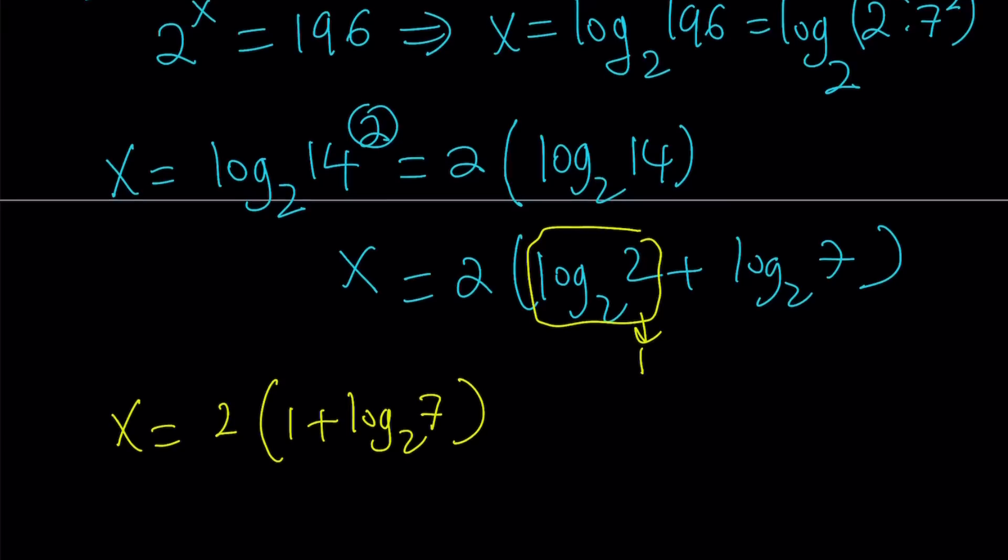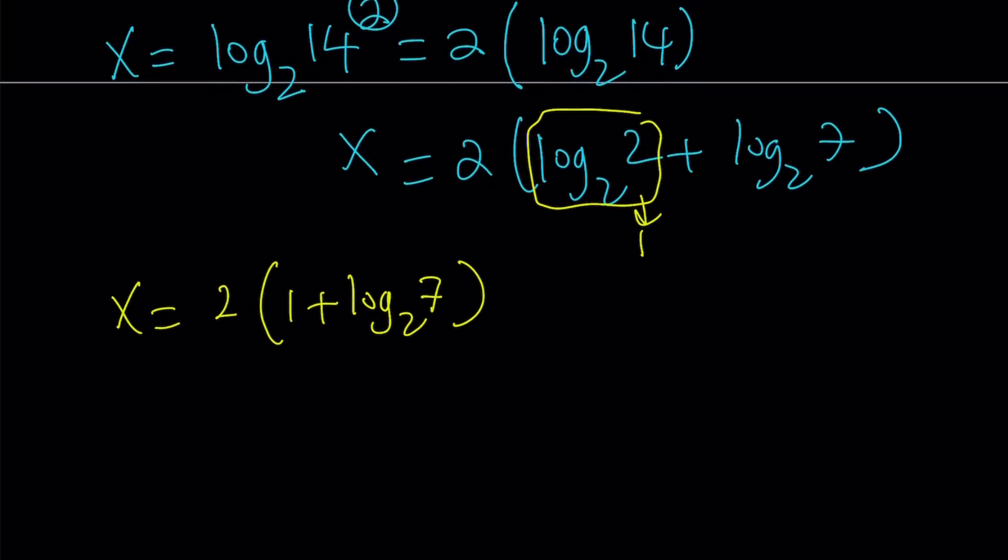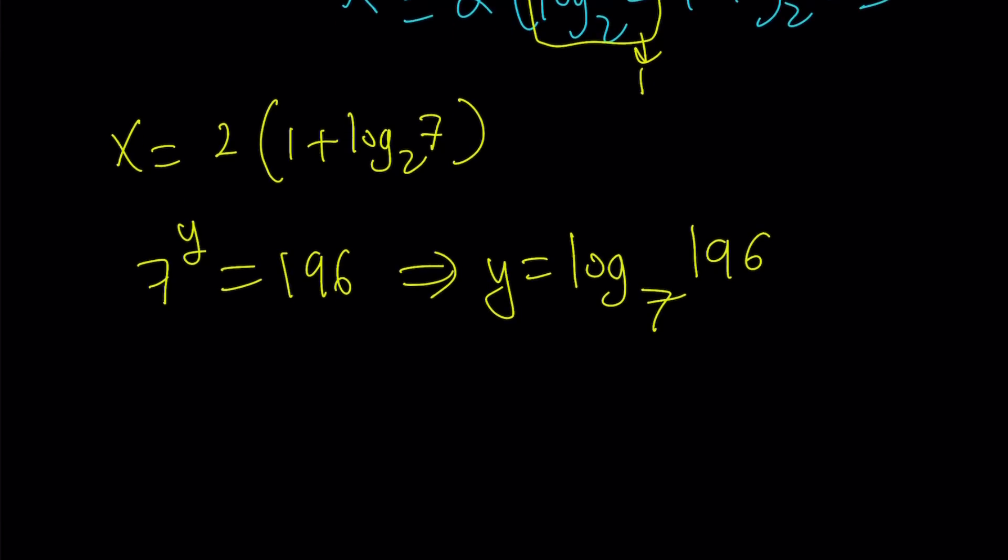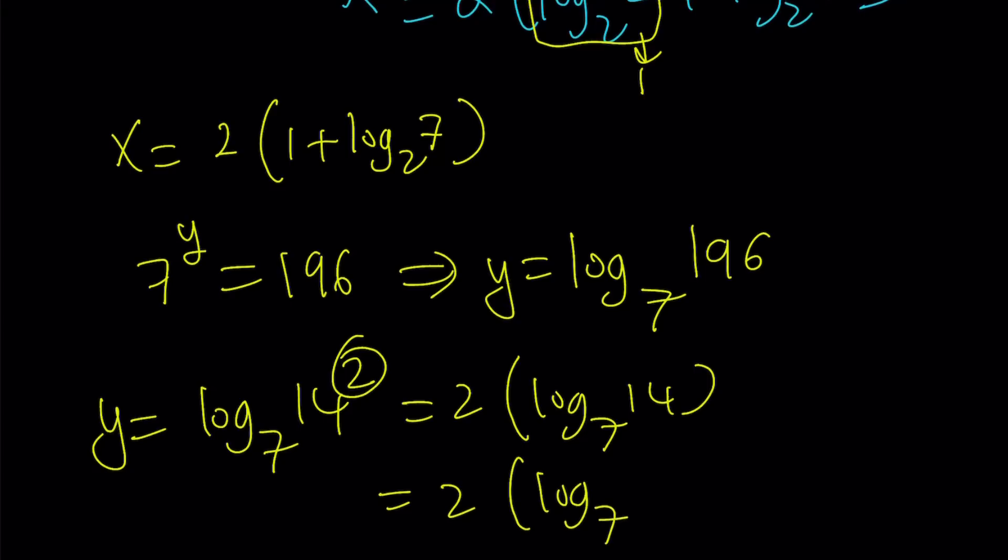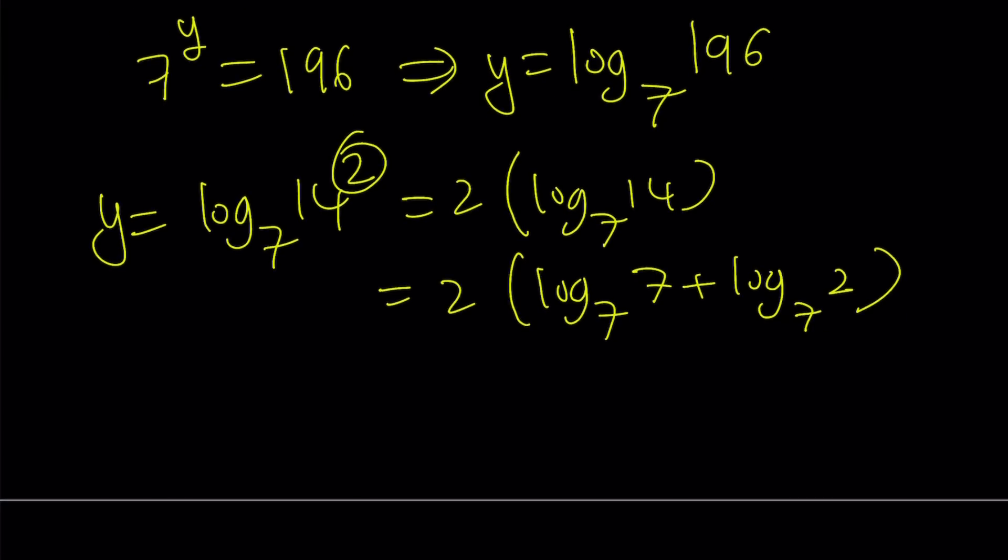Let's go ahead and do the same thing with y. I have 7 to the power y equals 196. From here, y equals log 196. But this time, it is in base 7. Great. Let's go ahead and write 196 as 14 squared. And then move the 2. And we're going to get log 14. And now log 14 can be broken down into log 7 and log 2. But they're both in base 7. So this is y.